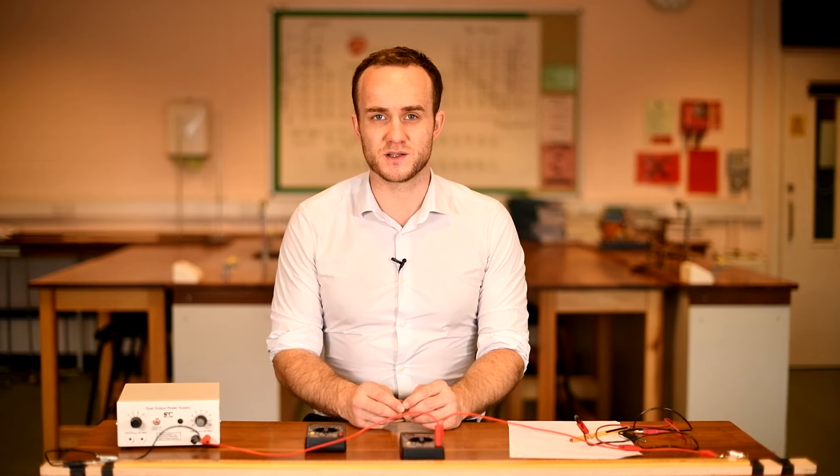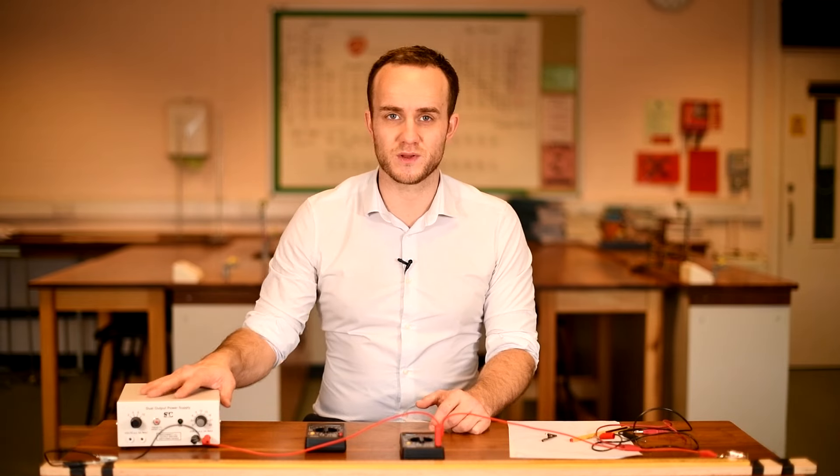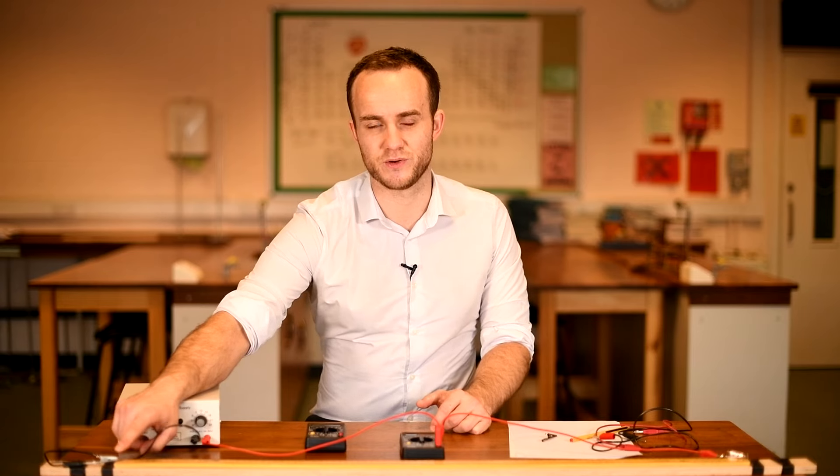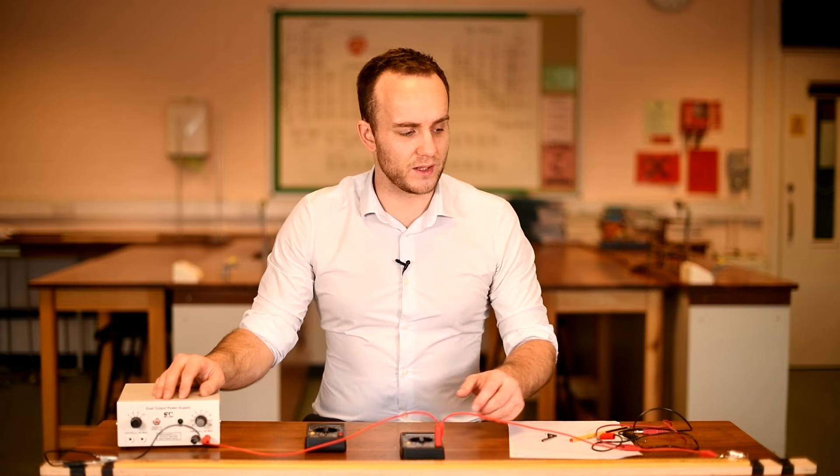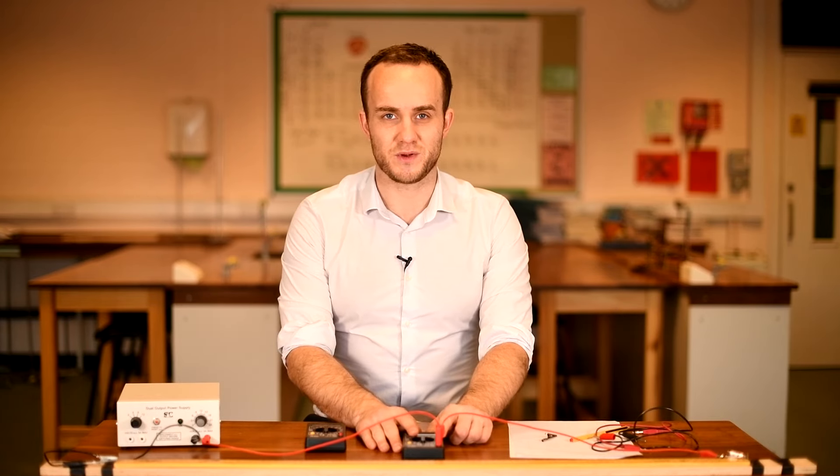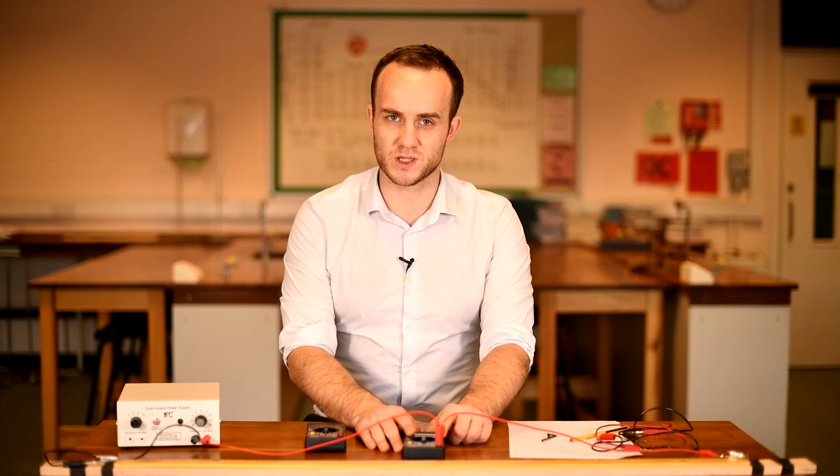Now I've already built my basic circuit. I have my power supply here that's hooked up to the end of the wire by a crocodile clip right at the end of the meter rule, and then the other end of the meter rule I have a wire coming off and that's going to my ammeter in the middle here so I can record the current.